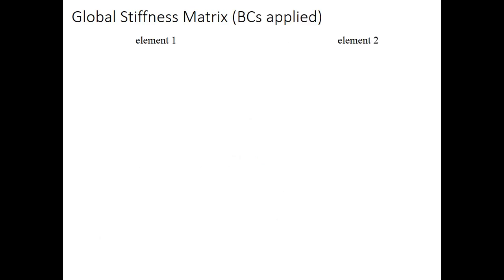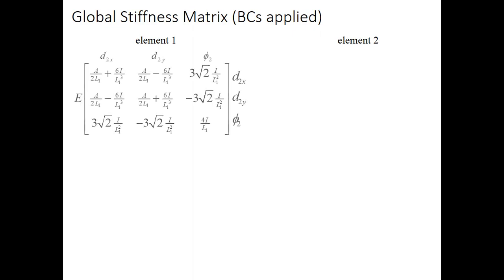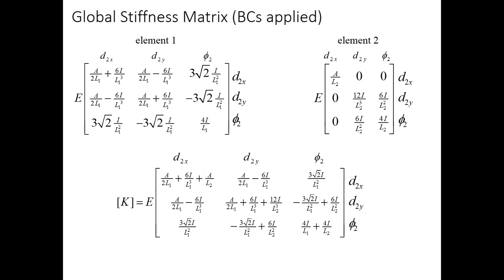Let's assemble a global stiffness matrix with the boundary conditions applied. In other words, just the portion of the stiffness matrix that affects the unknown degrees of freedom. For element 1, that was the 3 by 3 here. For element 2, it was this 3 by 3. When I add them together, I want to make sure that I get all of the terms in the right rows and columns. This is a pretty straightforward one. We can see the rows and columns association with degree of freedom is the same for these two. So it's simply a matter of adding the individual terms together.